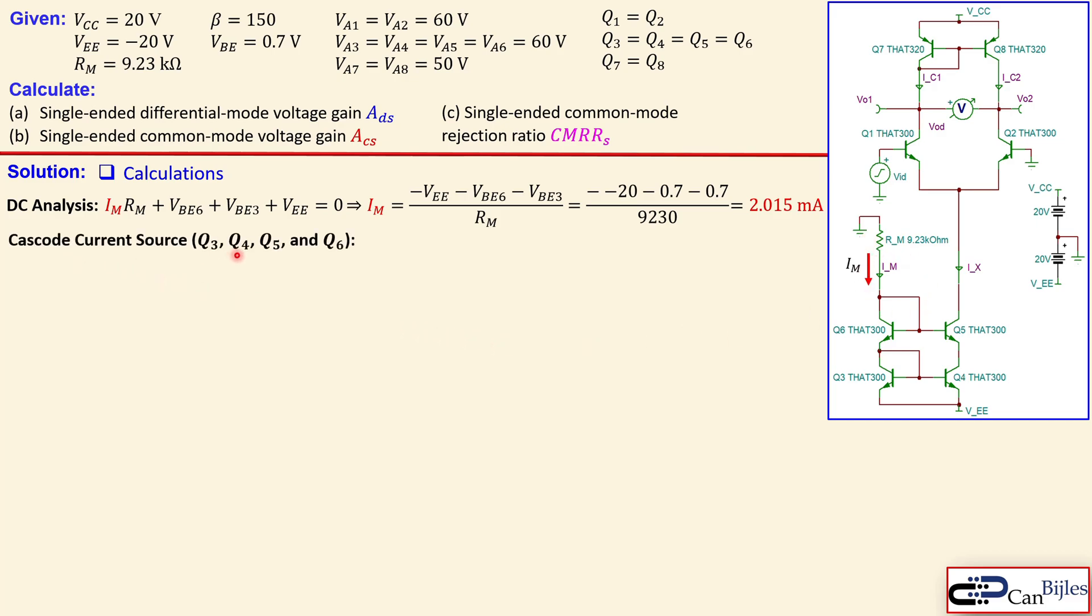Now the cascode current so this is formed by the Q3 up to Q6 will be then relating this IM to IX and IX is here called the tail current and that is given by this expression. We have discussed this also in the previous example, example number 5. This will also take into account the early effect. We see that here the VAs for the Q5 and also the Q6. Now when you now substitute here the values for this circuit, we know what the beta is, we know what the VE is and also the early voltages. You will get here this ratio only is 0.9745. Now when you also use the value of IM, just calculate it, you can calculate IX in this format. Now that will give you 1.964 mA. So the current here will be then this much.